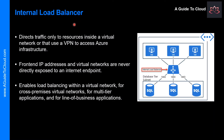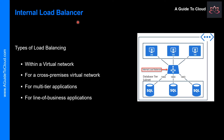What is an internal load balancer? An internal load balancer directs traffic only to resources that are inside a virtual network or that use a VPN to access Azure infrastructure. The front-end IP address and virtual network are never directly exposed to an internet endpoint. Internal line of business applications run in Azure and are accessed from within Azure or from on-premises resources. For example, an internal load balancer will receive database requests that need to be distributed to backend SQL servers.